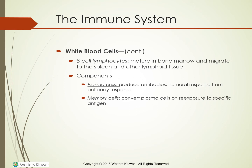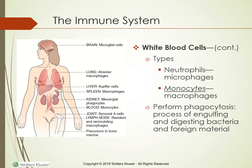B-cell lymphocytes mature in the bone marrow and migrate to the spleen and other lymphoid tissues such as the lymph nodes. When stimulated by T-cells, the B-cells become either plasma or memory cells. Plasma cells produce antibodies. Formation of antibodies is called a humoral response. Memory cells convert to plasma cells on re-exposure to a specific antigen. When activated, B-cells accumulate in lymphoid tissues, which explains the phenomena of swollen and tender lymph nodes that accompany infectious disorders and an enlarged spleen in various immune disorders.